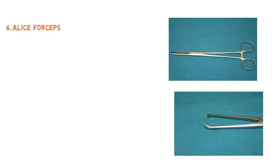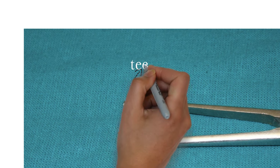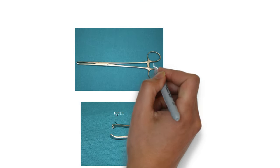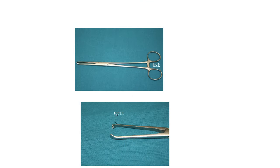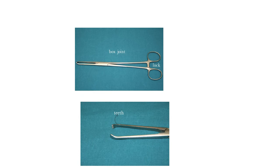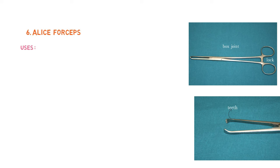Our next instrument is Allis forceps. The tips are curved inside and have four to five rat teeth which fit into one another for a firm grip of tissue. The proximal end has finger grips and a ratchet lock, just like hemostatic forceps. However, unlike the previous two instruments which had a cross joint, Allis forceps has a box joint.